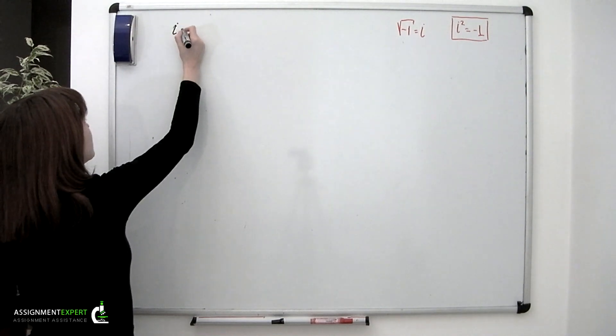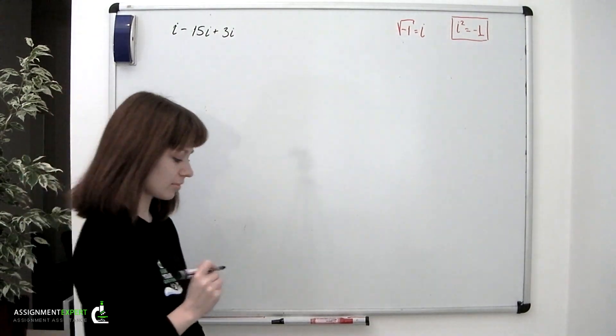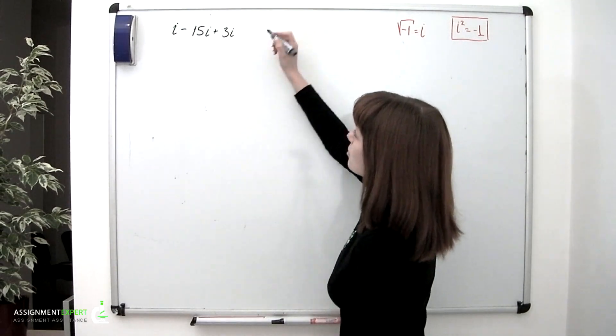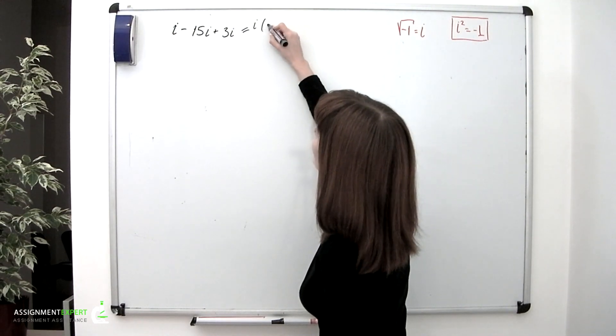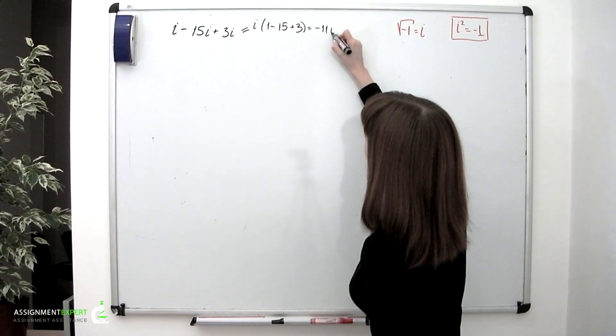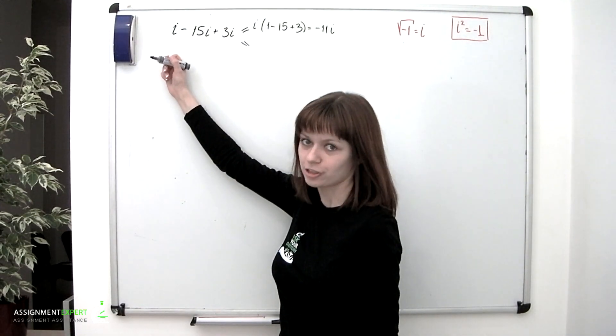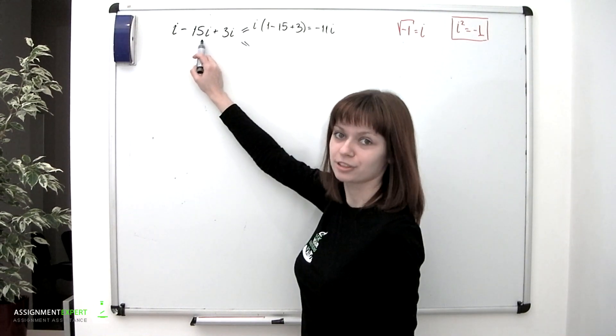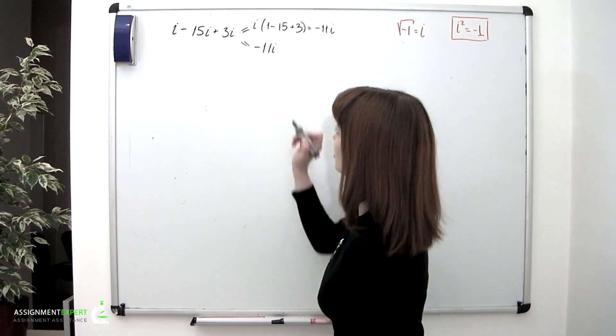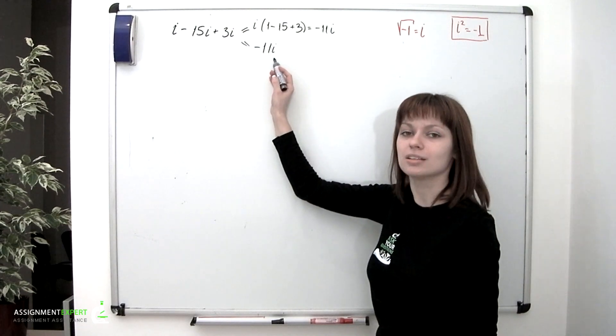Suppose we have i - 15i + 3i. We could use an adopted approach and treat i as a factor which could be factored out, and therefore we'll have i(1 - 15 + 3), which equals -11i. Or we could simply take 1 but of different nature, then subtract 15 of different nature, and then add 3 of different nature, obtaining -11 of different nature. Both ways led us to the same result, -11i, which is an imaginary number.